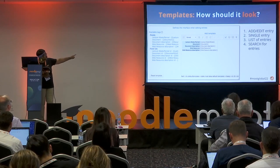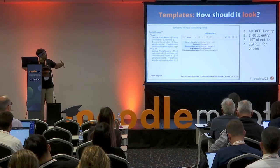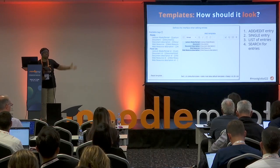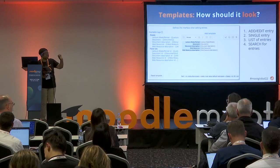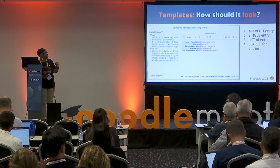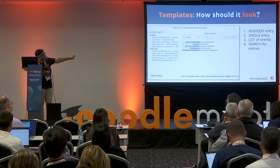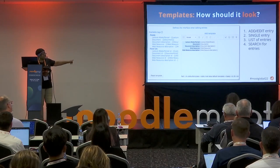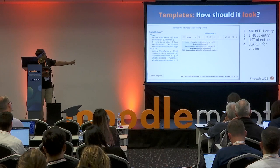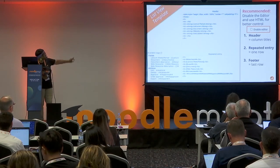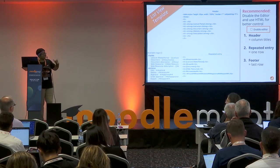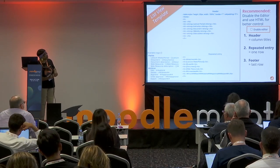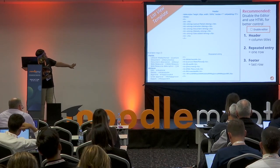For templates, you have one for adding an entry, viewing a single entry, viewing a list of entries, and for searching. For the search template, you probably don't want all fields — just pick key ones like the name and a date. You get a WYSIWYG editor where you can color things, add images, and add links — like YouTube links. You can also turn off the editor to work directly in HTML, which is recommended for the list view. In Moodle 4.0 there's a checkbox in the lower right corner to uncheck so you can work in HTML and have more control.